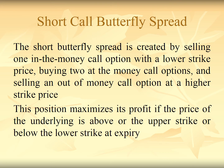The short butterfly spread is created by selling one in-the-money call option with the lower strike price, buying two at-the-money call options, and selling one out-of-the-money call option at a higher strike price. This position maximizes profit if the price of the underlying asset is above the upper strike price or below the lower strike price at the expiry date.